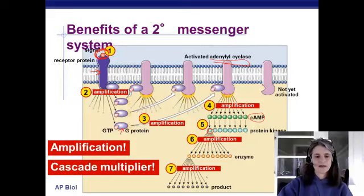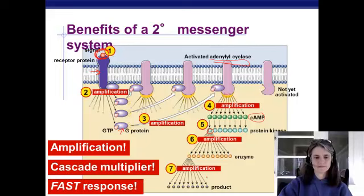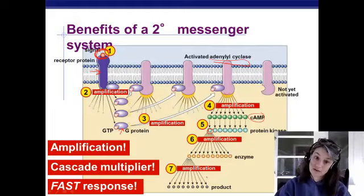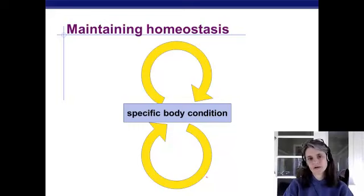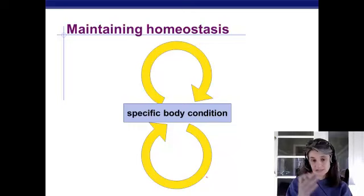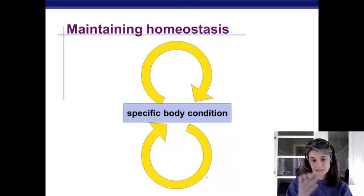A cascade multiplier — huge amplification leading to a very fast response, even if it's not a nervous response. We'll stop here, take a break, and then pick it up by looking at some of these hormonal cycles, including the cycling idea we've looked at before.